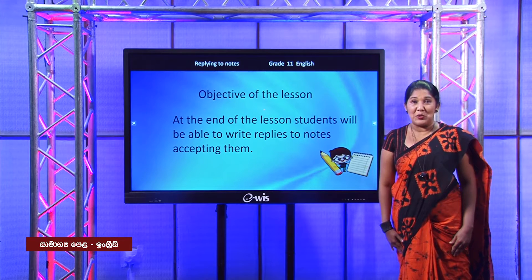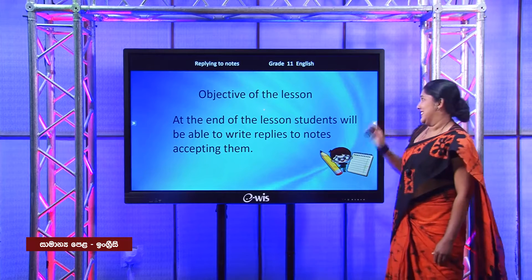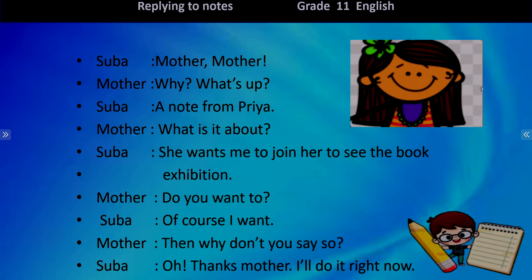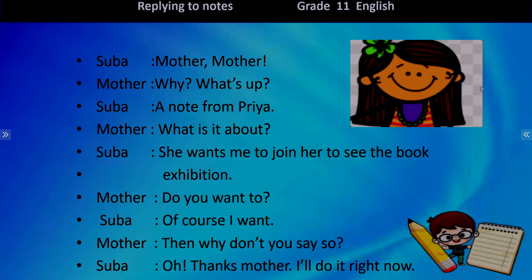Before we start the lesson, I would like to show you a dialogue. This is a dialogue between Subha and her mother. Let's read and see what they talk about. Mother: 'What's up?' 'A note from Priya.' 'What is it about?' 'She wants me to join her to see the book exhibition.' 'Do you want to?' 'Of course I want!' 'Then why don't you say so?' 'Oh, thanks mother, I'll do it right now.'